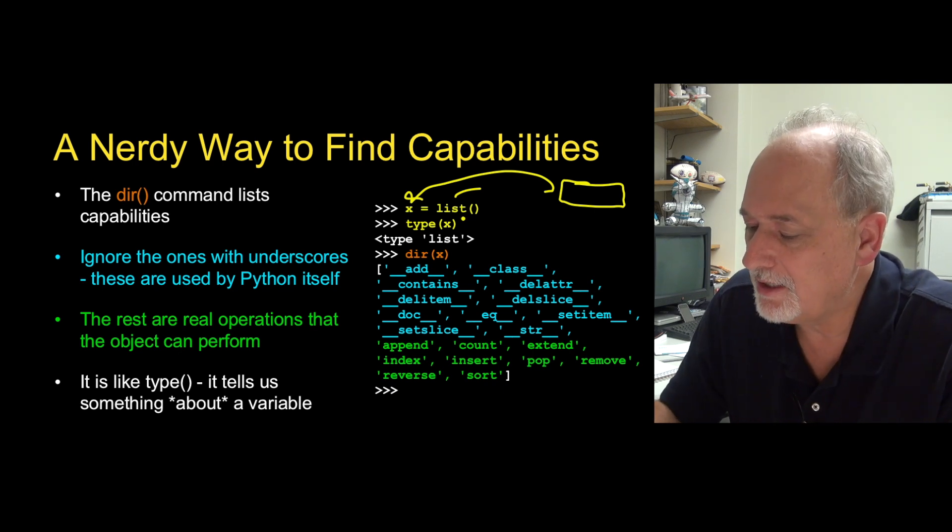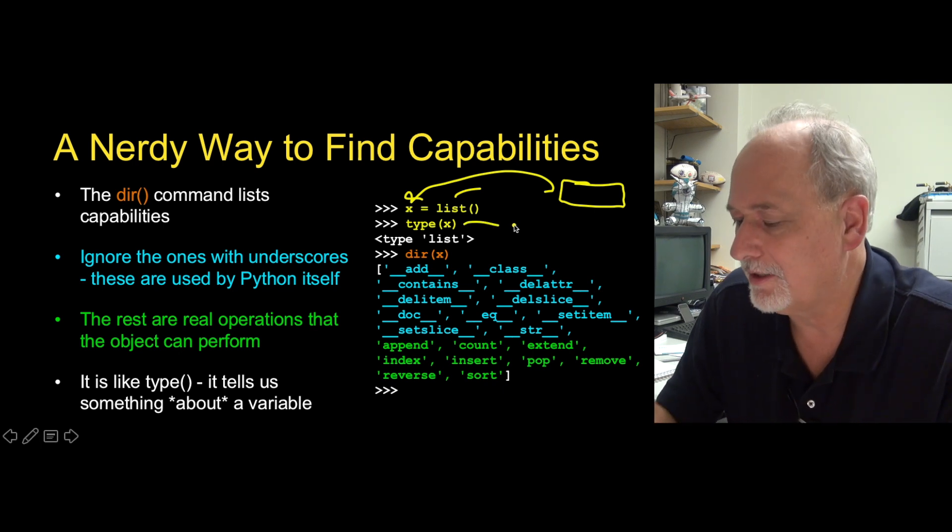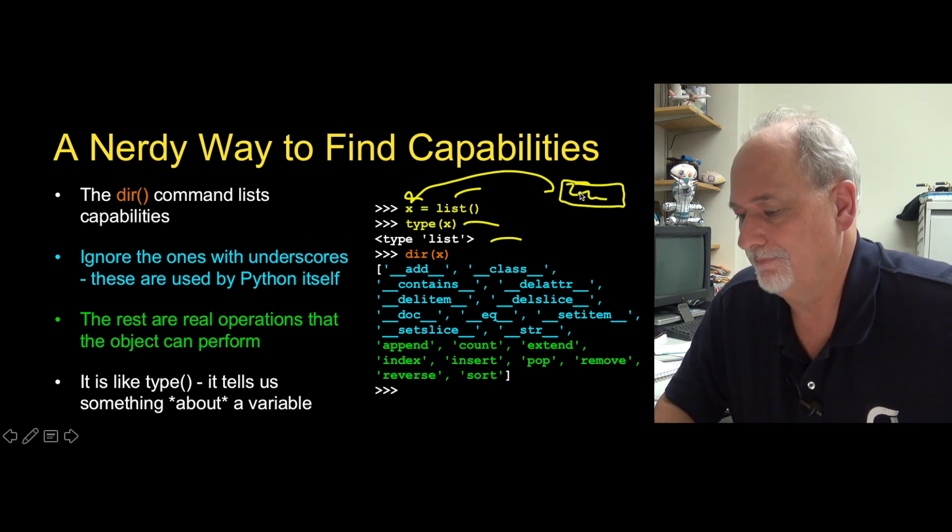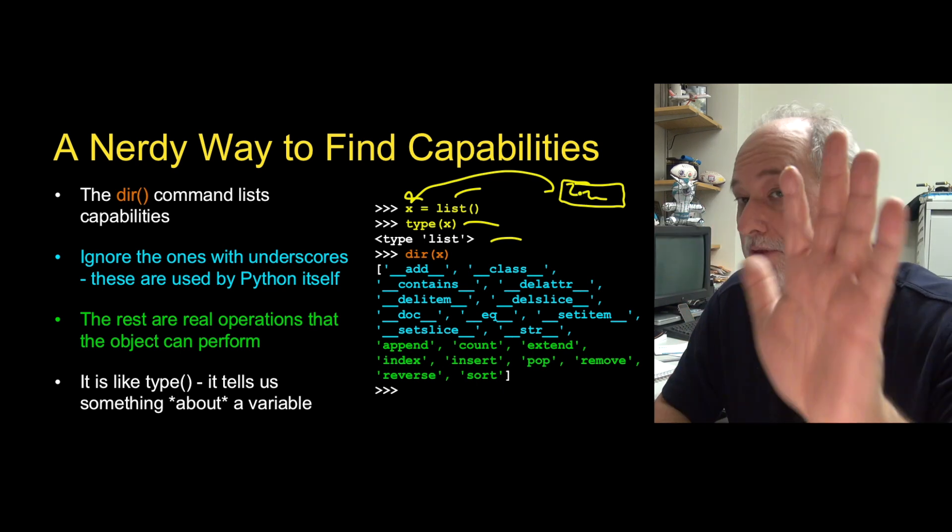So then we say, hey, what is in x? What kind of thing is x? Well, it's a list. This is a thing. It's a list type. Lists have lists of things in them. And, you know, use append and all the things we've been doing before, they're just objects.